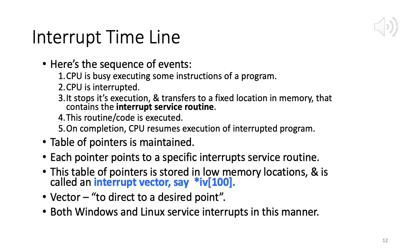Each interrupt can signal a different kind of event — an input interrupt differs from an output interrupt. So a table maps each interrupt to its corresponding ISR. This data structure is called an interrupt vector — for example, IV[100] means 100 pointers each pointing to interrupt service routines. This is similar to an array of pointers in C programming. The interrupt vector is stored in low memory locations, going from address zero upward. Both Windows and Linux service interrupts in exactly this manner.